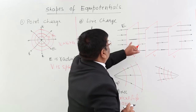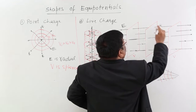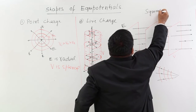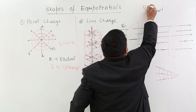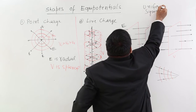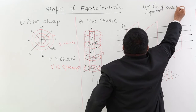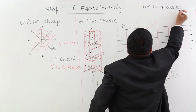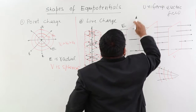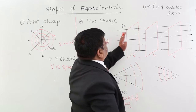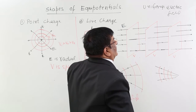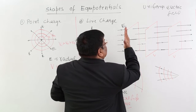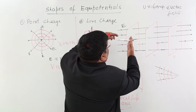Now we come to another electric field that is well known — we call it a uniform electric field, also called a symmetrical electric field. If this is a uniform electric field, then how will the equipotential surfaces look? Draw perpendicular to it, and everywhere you will find this surface is perpendicular to the electric field.